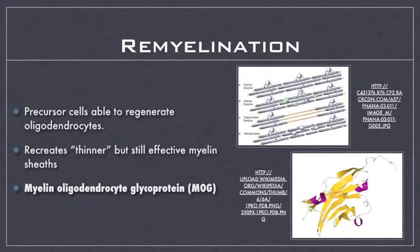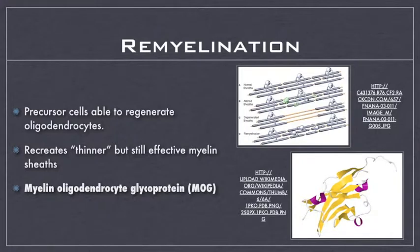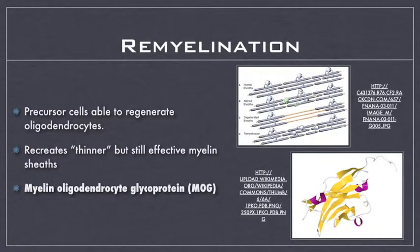It's nice to conceptually understand myelination, but in a scientific environment, how could scientists quantitatively measure demyelination or remyelination? It turns out this is possible due to a protein called myelin oligodendrocyte glycoprotein, or MOG for short. MOG is expressed when myelination occurs, and so with an increase in myelination, as we've seen in remyelination, there will be an increase in MOG expression.